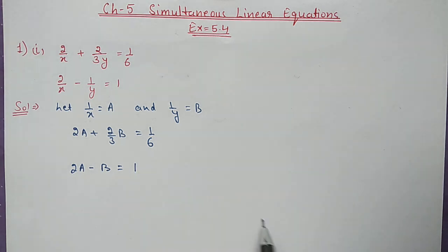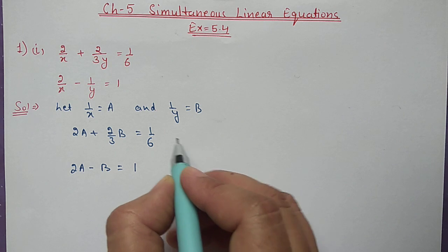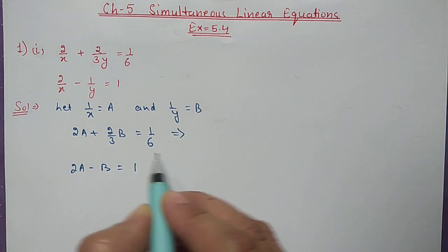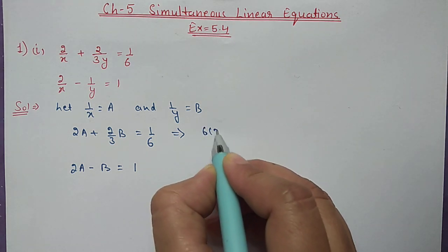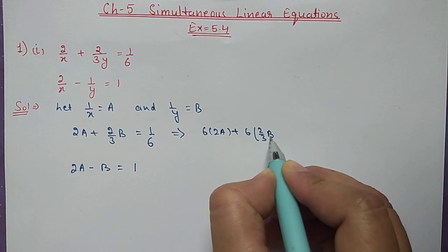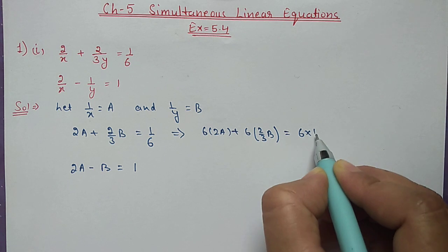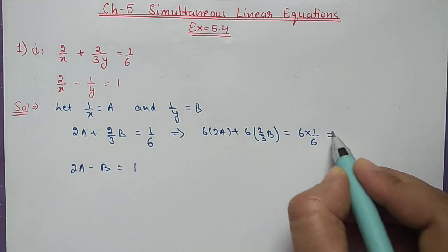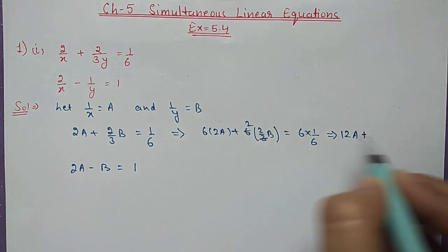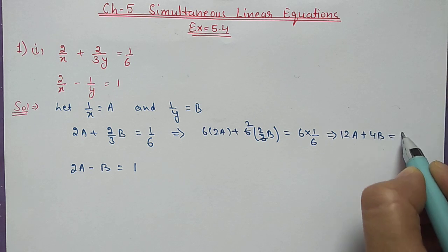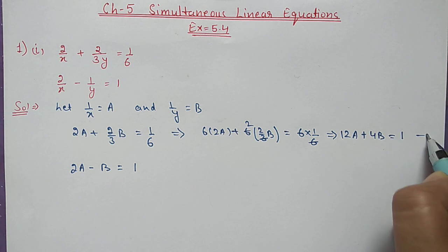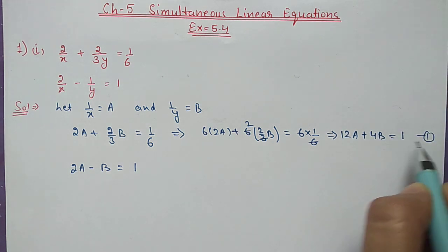Now we can take the LCM and change it into simplest form. We multiply the whole first equation by 6 because the LCM is 6. So 6 into 2a plus 6 into 2/3b equals 6 into 1/6. This gives us 12a plus 4b equal to 1, after cancelling. The 6 and 6 also cancel, so our first equation is 12a plus 4b equal to 1.